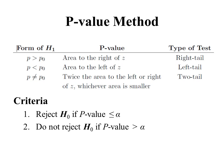We use the p-value to come to the technical conclusion using these criteria: we reject the null hypothesis if the p-value is less than alpha, and we do not reject the null hypothesis if the p-value is greater than alpha. There's no critical region here — all we have to do is compare the p-value to alpha. If the p-value is less than alpha, we reject the null hypothesis; otherwise we do not reject it.